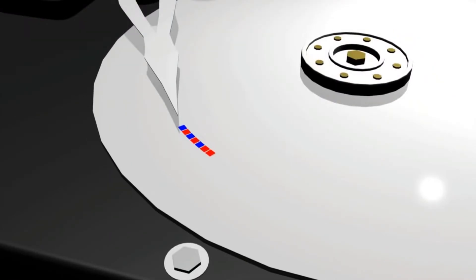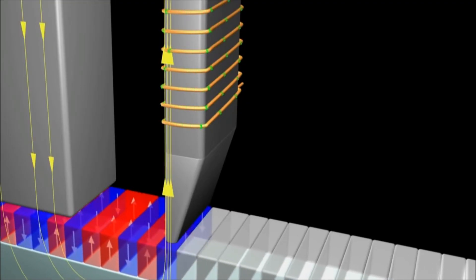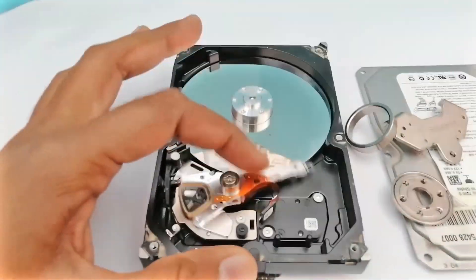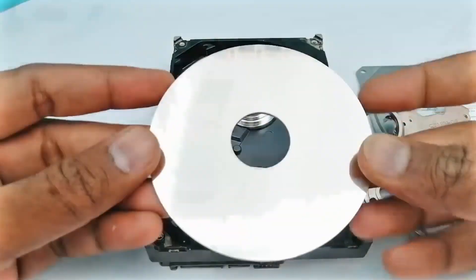In a computer hard disk, it saves 0 or 1 by magnetizing a particular part of the hard disk, which is later identified with the help of current that they produce. If we open a hard disk drive and look inside it, we only see one metal disk. We hope you understand how a hard disk works.